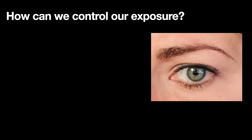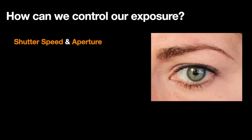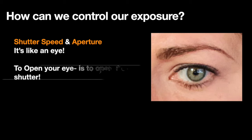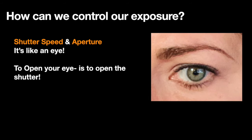Let's simplify this before we get any more complicated. How can we control our exposure? Two words: shutter speed and aperture. Let's keep it simple — it's like an eyeball. Blink your eye, open and close it. When you open it, you're letting light in — it's like opening a shutter so that light comes in. And when you close it, you're deciding no more light can come in.